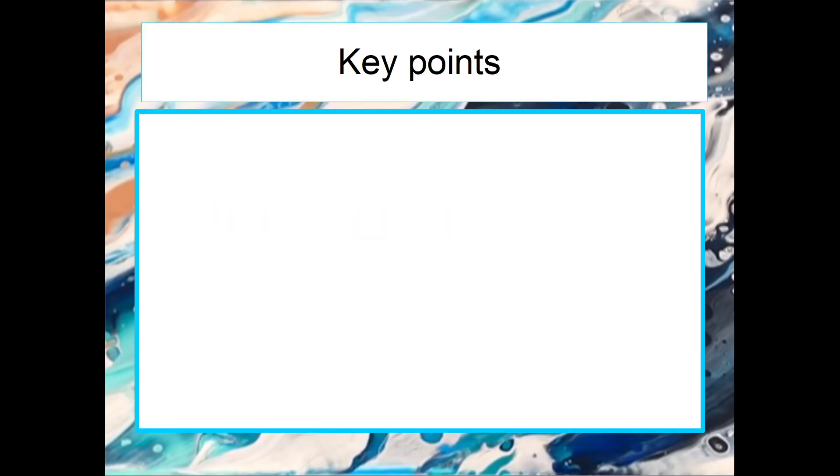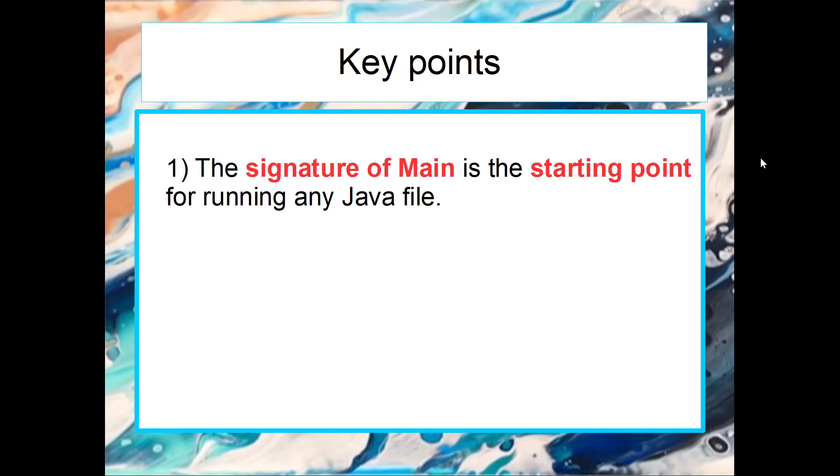Before we look at the code, I want you to remember four key points that you must remember from this video. Number one, the main method in Java is the starting point. It is the method that tells Java where to execute or which code to execute first. So you need to remember the signature of the main is the starting point.